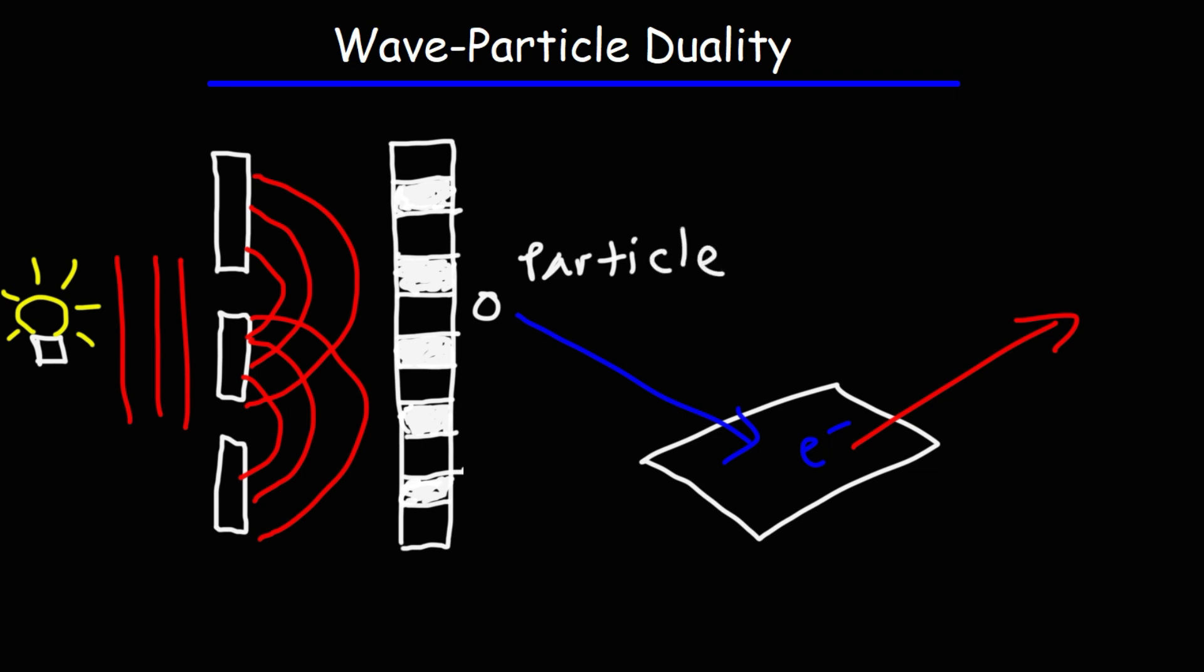So thus we have this idea of wave-particle duality, where light has a dual nature. It can behave like a particle. Particles of light are known as photons, and these photons can behave like waves. They can form a diffraction pattern around two openings.